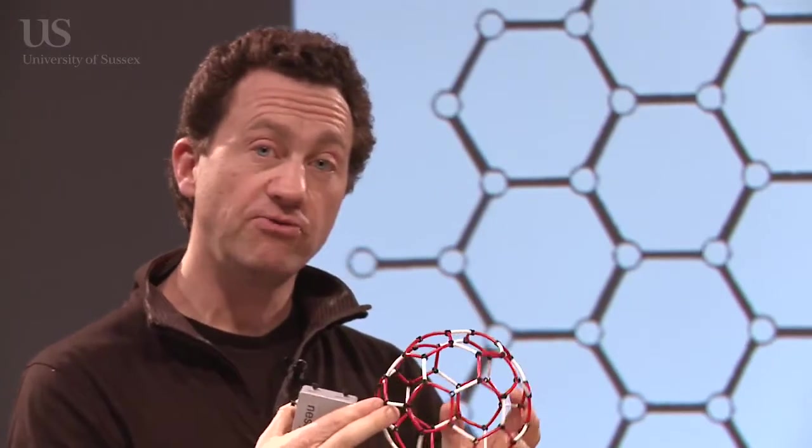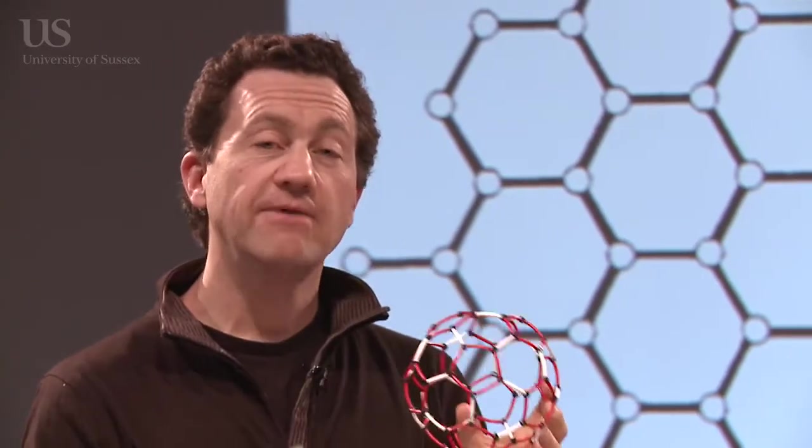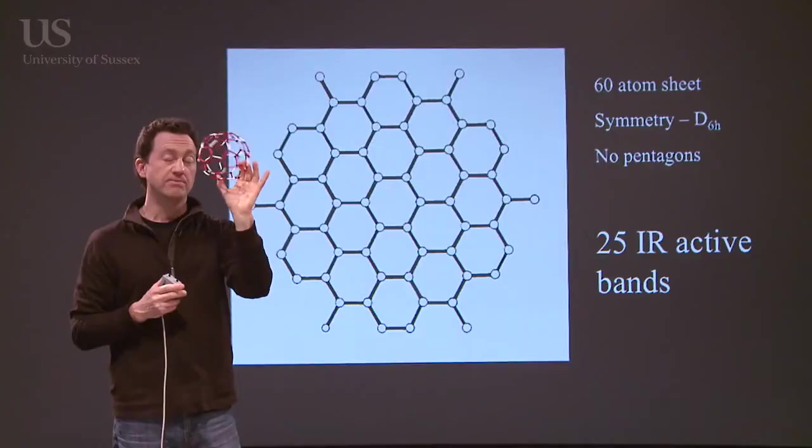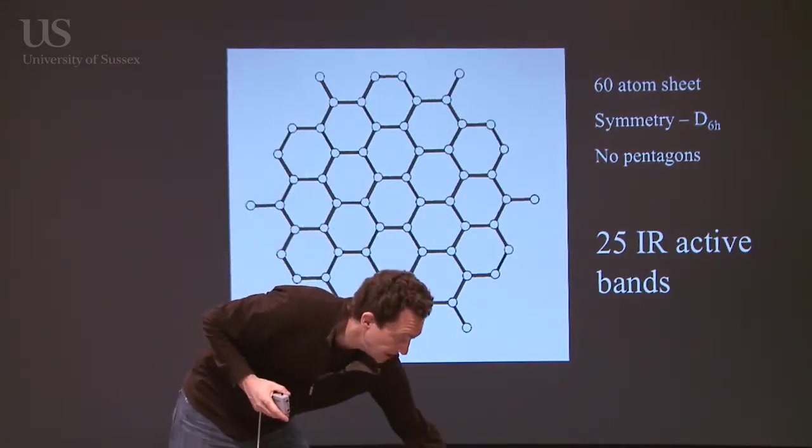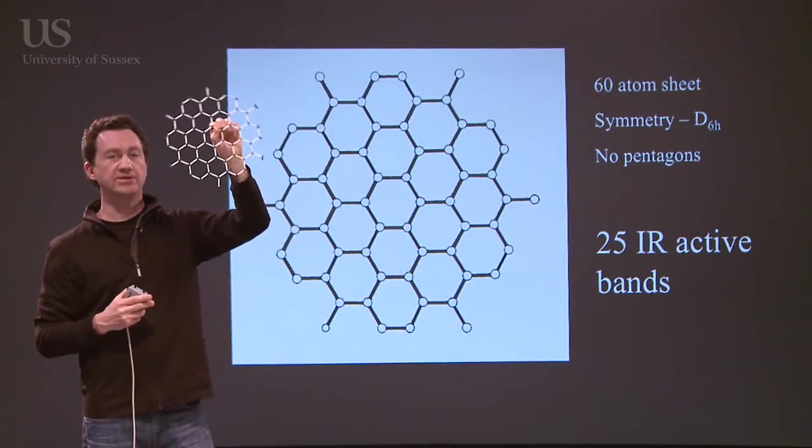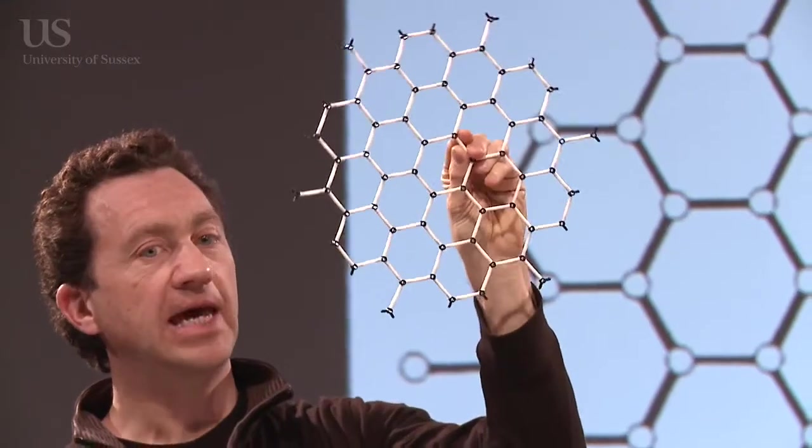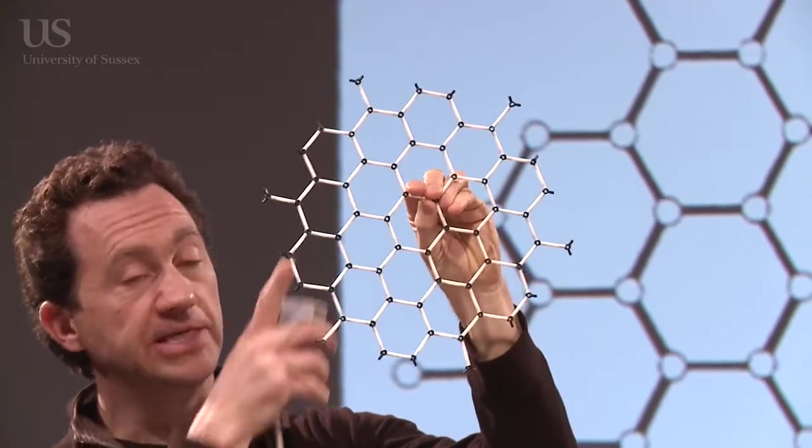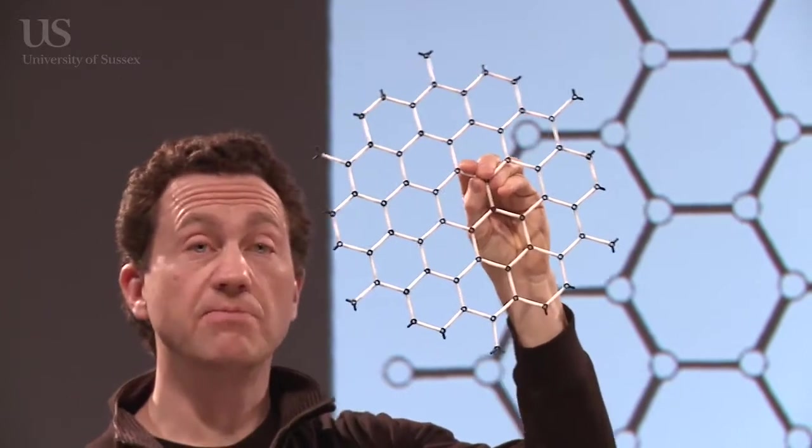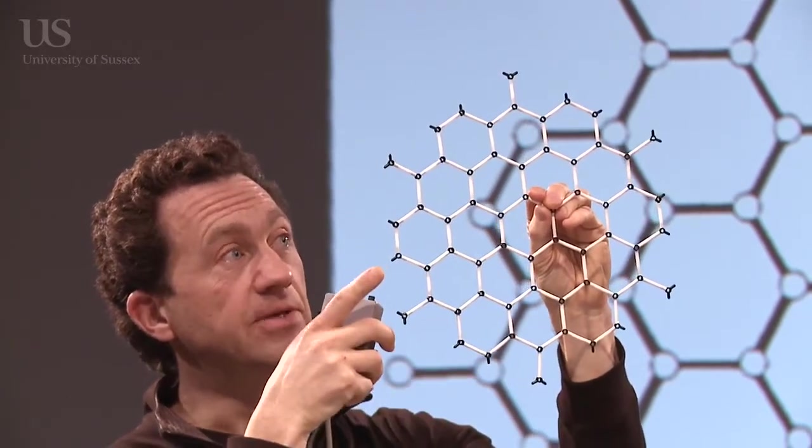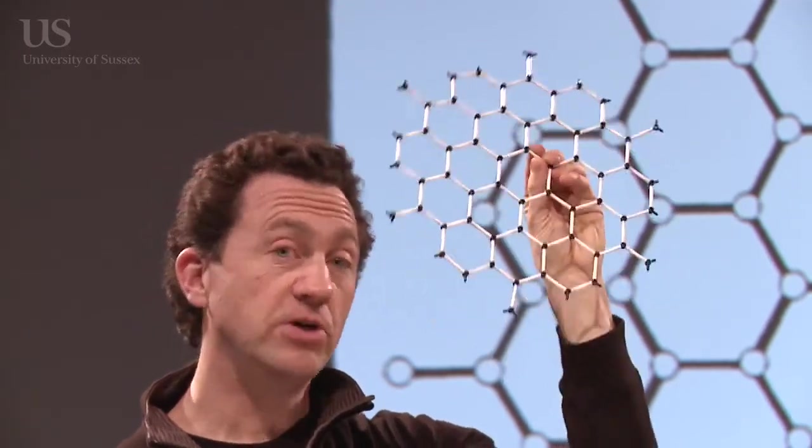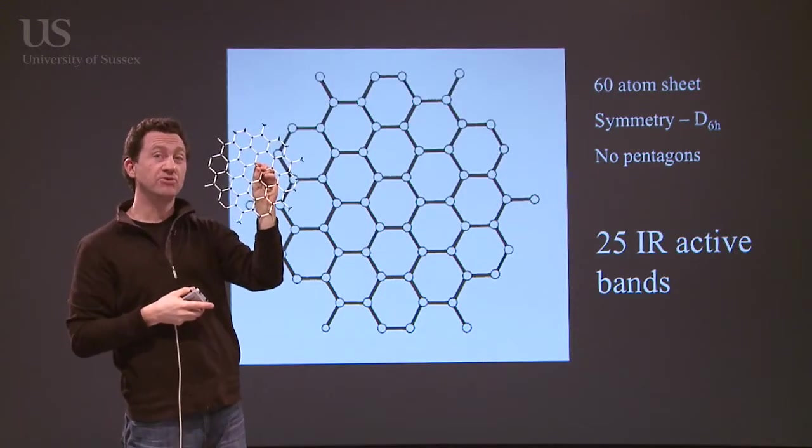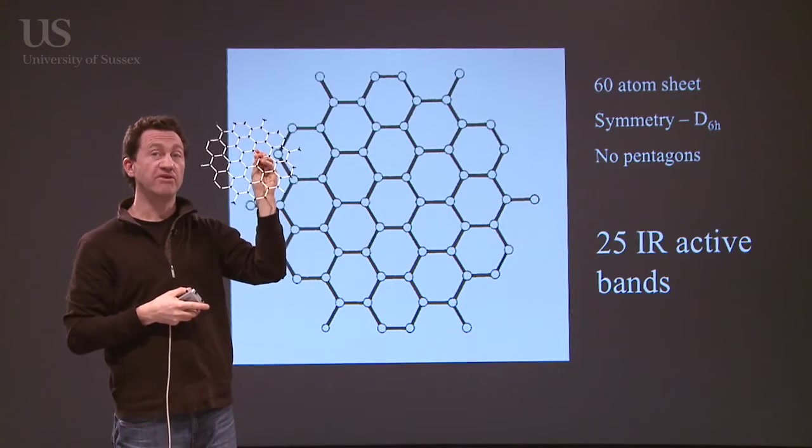So I've got here three models. They each have 60 carbon atoms. So they could each be a candidate for C60. Only one of them is the real one. Behind me here, you'll see this is a 60 atom sheet. It's a flat sheet, so it's like a bit of graphite or graphene. And it's all hexagons. This has got 60 carbon atoms. If you can make this molecule, you can work out from the group theory that only 25 of the motions will absorb in the infrared. So if you can make this molecule and put it in an infrared spectrometer, you'd expect to see 25 bands.